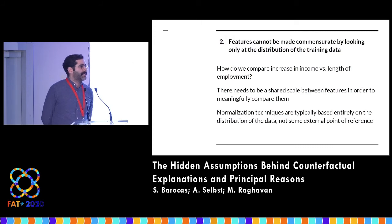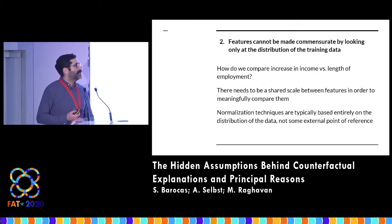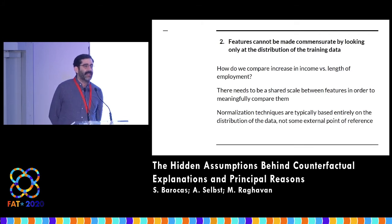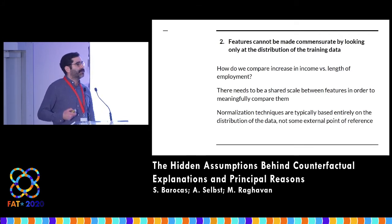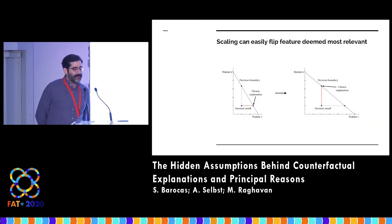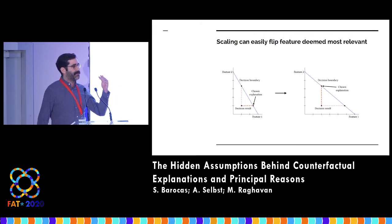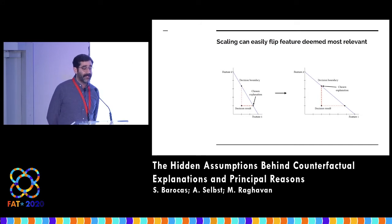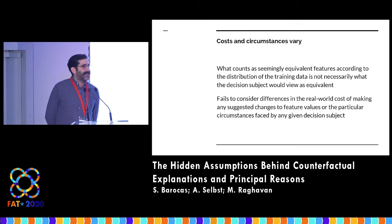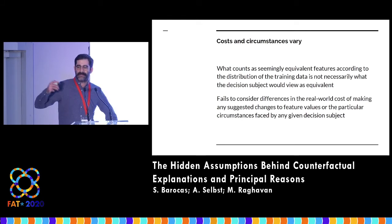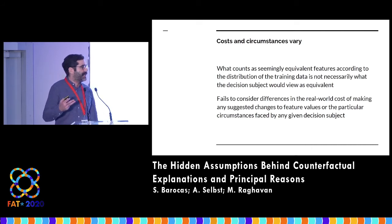The second assumption we look at is that features are often hard to compare to each other. How do you actually decide whether to emphasize that income is the relevant one or length of employment? There's no natural way to compare these things. Traditionally, much of this work has tried to normalize by looking at the distribution of the training data. But you can see that by simply scaling things slightly differently, we can actually switch what would be the more obvious thing to emphasize if what we're interested in is telling someone the least amount of effort they'd have to invest. The scaling issue is profound — the distribution of the data is not in any meaningful sense related to the difficulty of performing the task in the real world, and the true cost of making a change that would affect the feature is very hard to know and is not at all represented in the data itself.